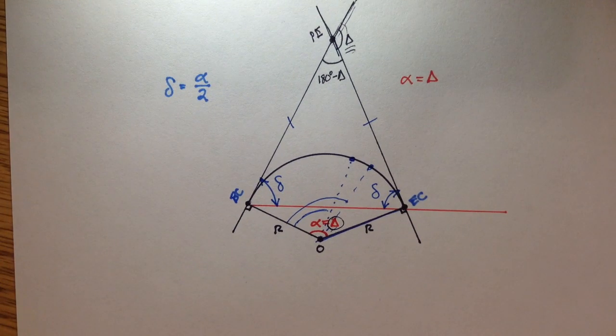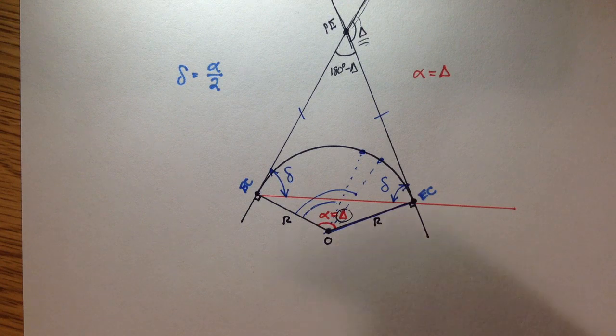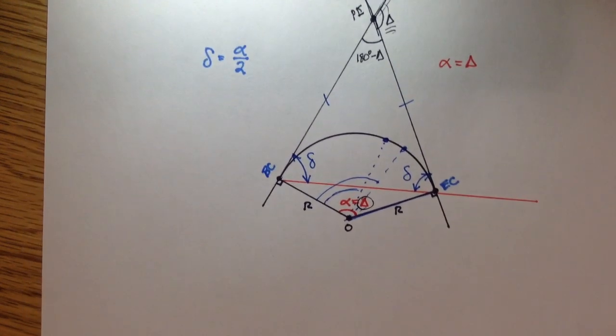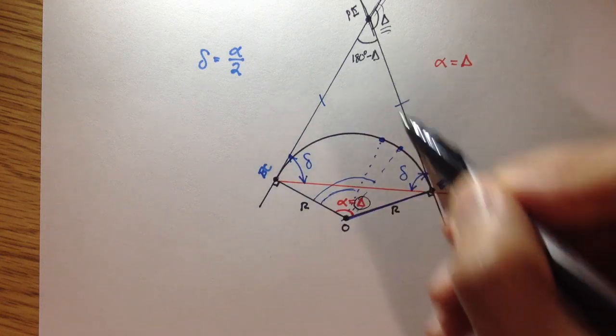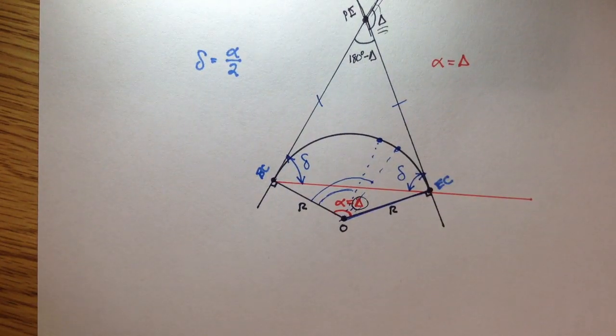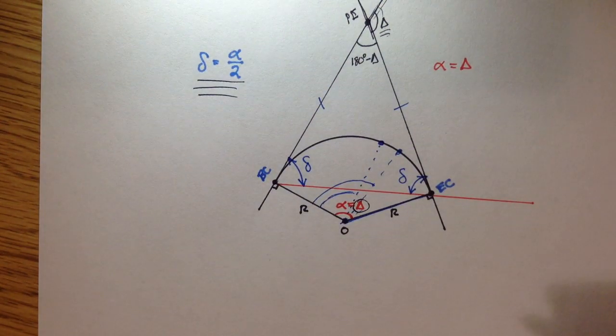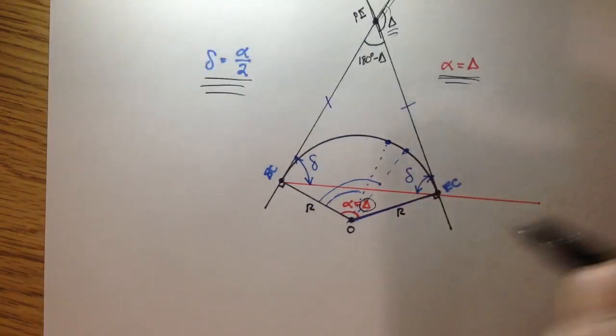And from geometry and trigonometry, we know that the sum of all the angles within a triangle is equal to 180 degrees. So, if I said the sum of the angles within this isosceles triangle is equal to 180 degrees, we can actually prove that delta, little delta, or the deflection angle, is equal to alpha over 2 in the case where alpha is equal to delta.